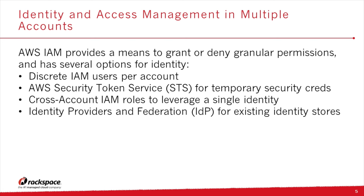An authenticated user from an external identity provider such as Microsoft ADFS, an OpenID provider, or even a custom broker can assume a role — that's how you grant permissions using an external identity store and federation. Resource policies are supported by several AWS services including S3, SNS, SQS, Glacier, OpsWorks stacks, and Lambda functions, allowing you to directly apply permissions to the resource being accessed.